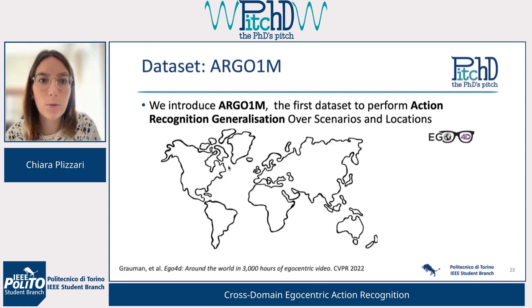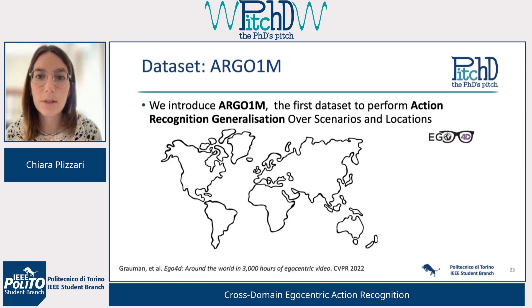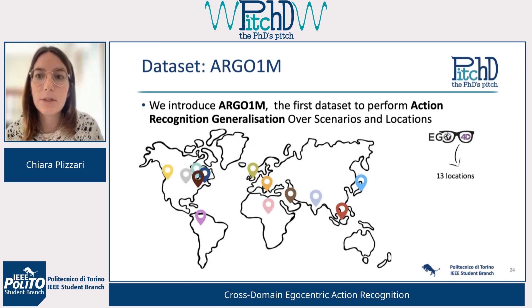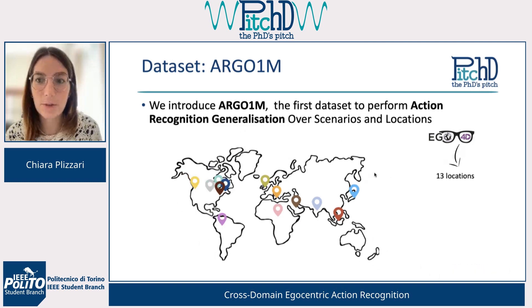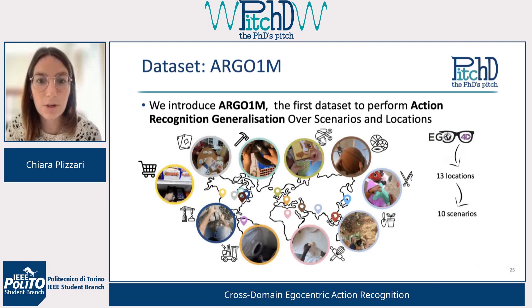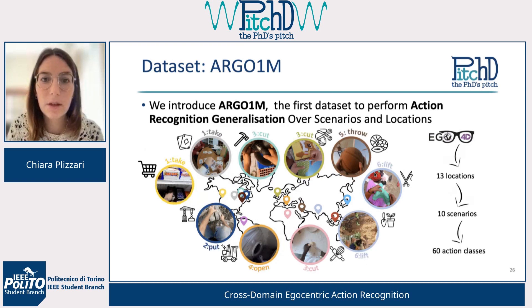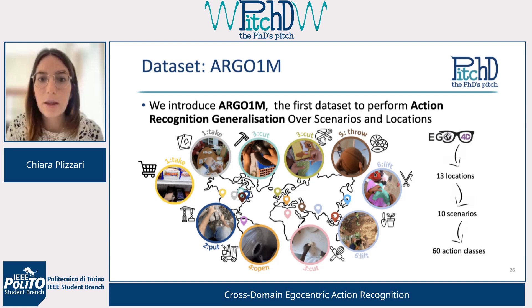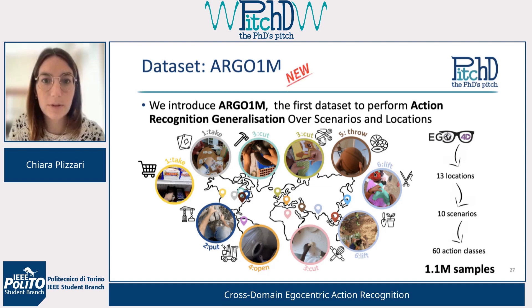In this work, we introduce a new dataset to perform action recognition generalization over scenarios and locations. We start with Ego4D, which is a large-scale egocentric vision dataset. We select 13 different locations and 10 different scenarios in which activities are performed, representing 60 different action classes — for example, cut, take, or throw. In total, this dataset contains 1.1 million samples, making it the largest dataset for studying this problem.